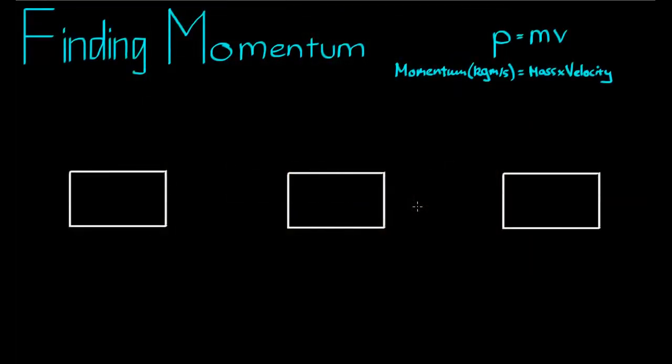Welcome everyone to another lesson in the motion series, this one on momentum. This is the first lesson we're doing on momentum, so it's not going to be very complicated. All we're going to be doing is finding the momentum of a particular object. Later in the motion series on momentum, we'll be looking at collisions between objects. But in this lesson, there'll be no collisions — it's just about finding the momentum of an object.